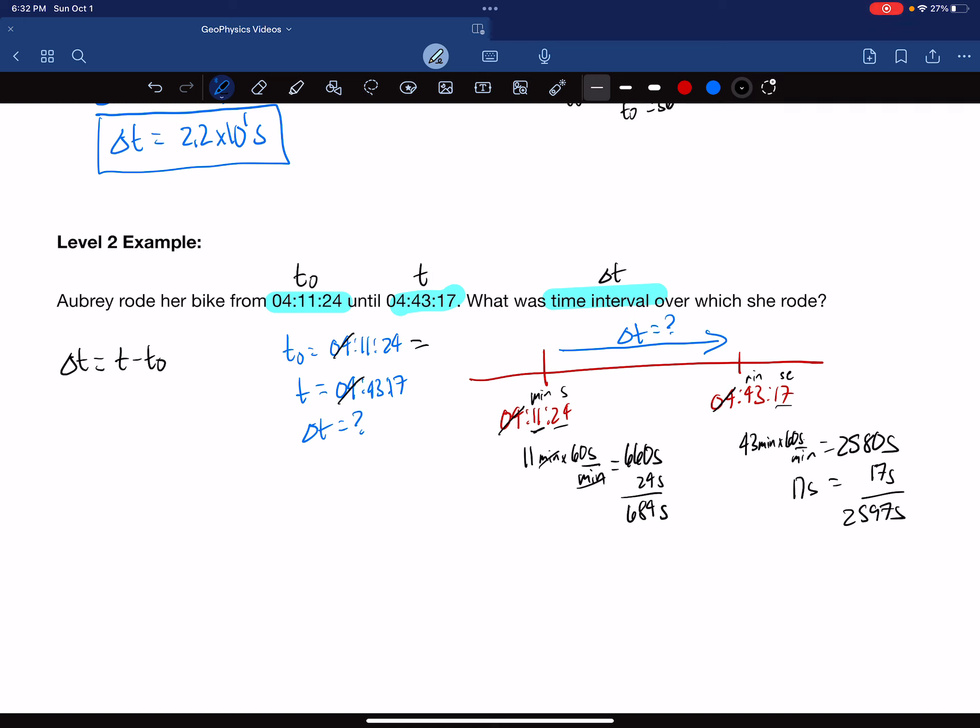So we cross those out and redefine these as 684 seconds and 2,597 seconds. We realized the only thing that differed was the minutes and seconds. We have to get them all into seconds because you can't just add minutes and seconds together in one unit.